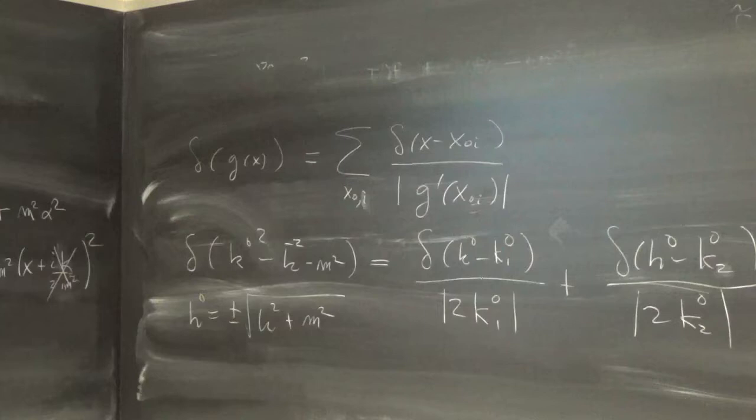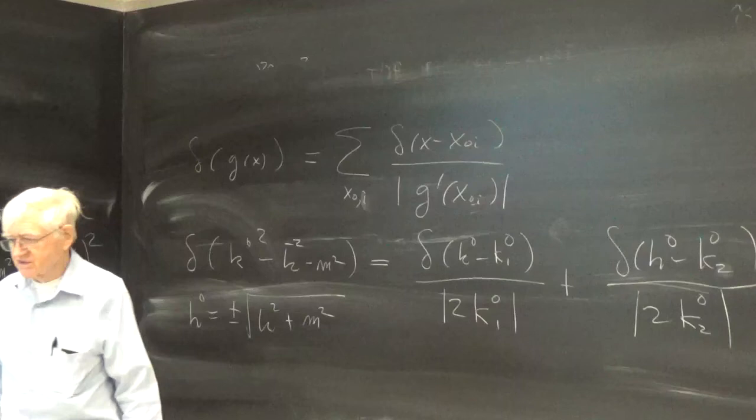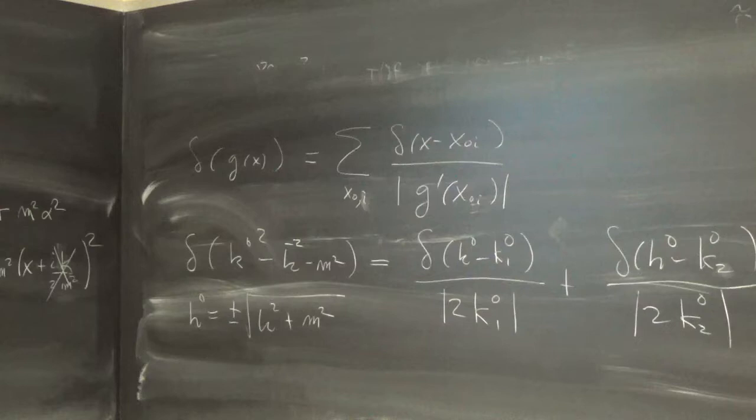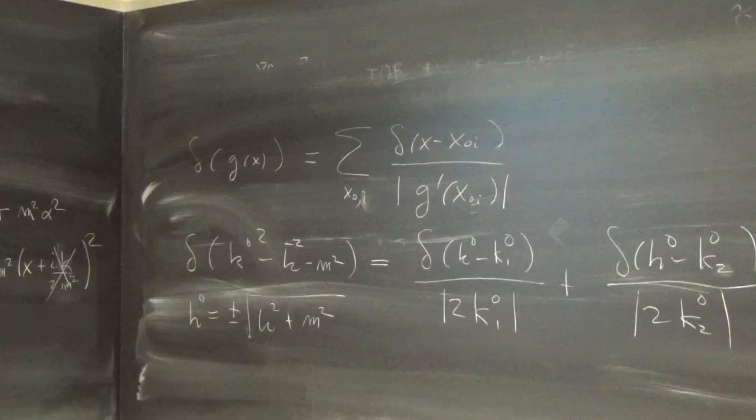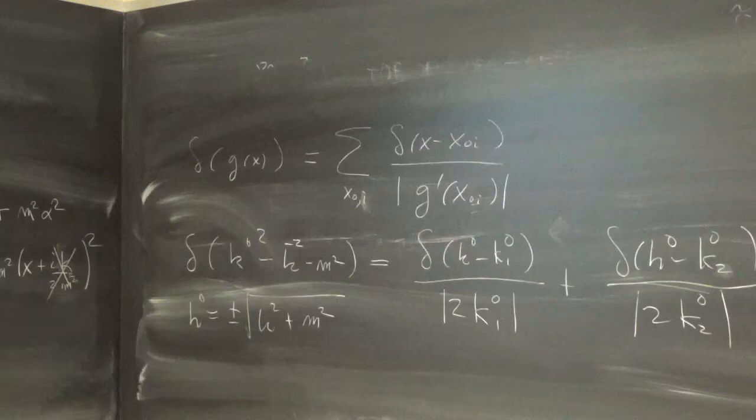Would you like me to explain natural units? It was Feynman who championed their use, and after a while it became universal. I once attended a string theory lecture where the speaker set h-bar, c, Newton's constant, Boltzmann's constant, pi, i, and the square root of 2 all equal to 1 — so it was very qualitative.